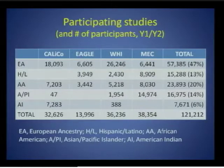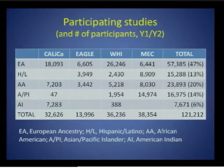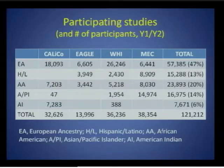Four study investigators and one coordinating center were funded. The study investigators included Calico, a consortium of cardiovascular cohorts; EAGLE, which comprises the NHANES population and the BioVU data repository at Vanderbilt University; the Women's Health Initiative, a large randomized controlled trial and observational study of postmenopausal women; and the Multi-Ethnic Cohort, a large study of diet and cancer.